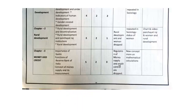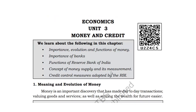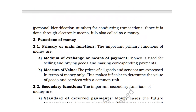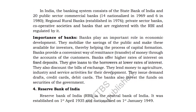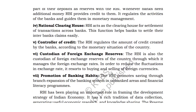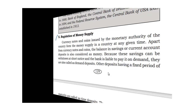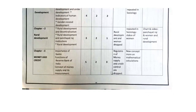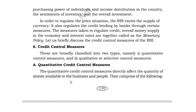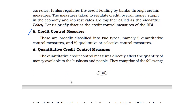In the next Economics chapter, 'Money and Credit,' we don't have 'Regulation of Money Supply' and 'Credit Control' — both topics are dropped. This chapter is in Book 2. Let us delete them by crossing them out. Regulation of Money Supply is deleted, and Credit Control Measures is also deleted.